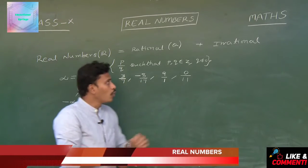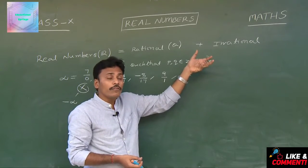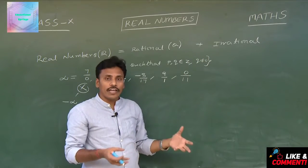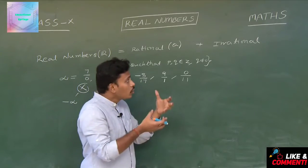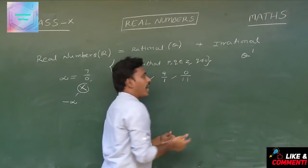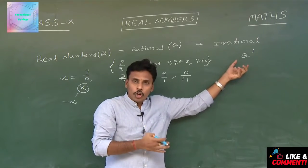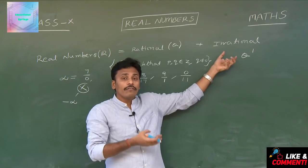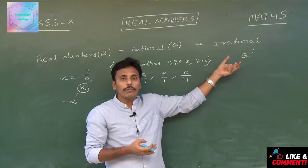Now let us look at irrational numbers. Simply put, irrational numbers are the numbers which are not rationals. Since irrationals are numbers which are not rationals, those irrational numbers are denoted by the letter Q dash — Q complement — meaning numbers which are not rationals and not in P by Q form.